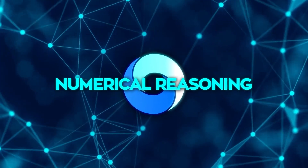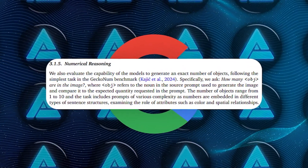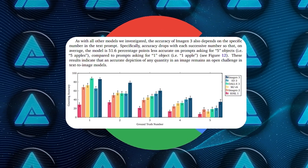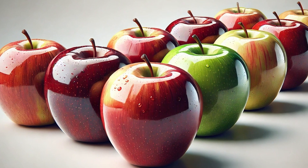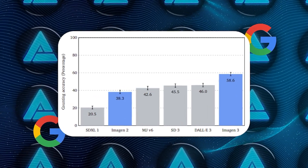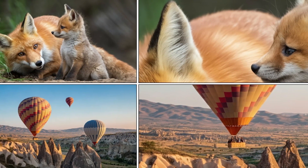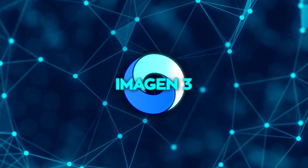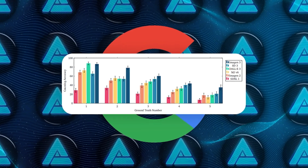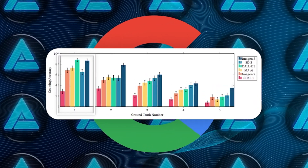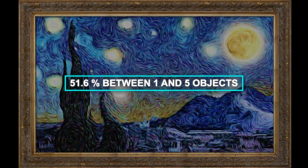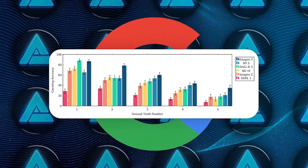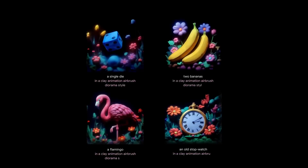Let's talk about numerical reasoning. This involves generating the correct number of objects when the prompt specifies it — so if the prompt says 5 apples, the model needs to generate exactly 5 apples. This is actually pretty challenging for these models. Imagen 3 performed the best in this area, with an accuracy of 58.6%. It was especially strong when generating images with between 2 and 5 objects, where a lot of models tend to struggle. Its accuracy dropped by about 51.6 percentage points between 1 and 5 objects, but it still outperformed DALL-E 3 and Stable Diffusion 3 in this task.